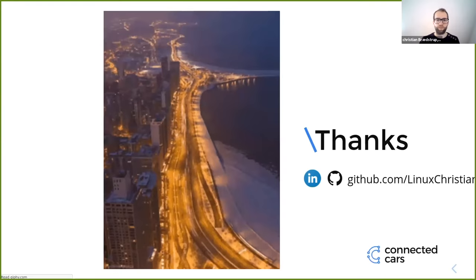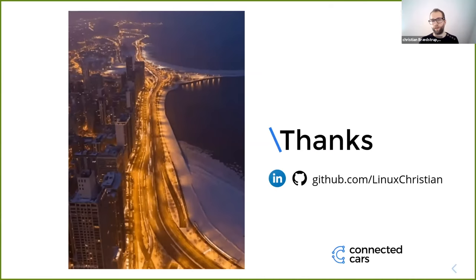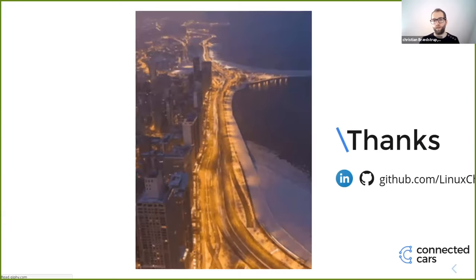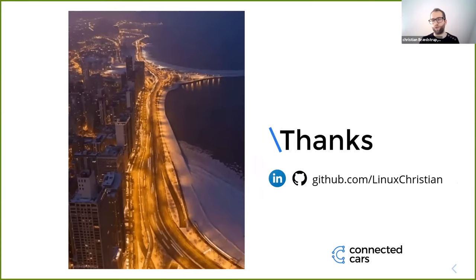We're in a much better place with Stout, but there's still a lot of work to do. The great thing is that when things break now, we can do a targeted fix, resubmit the code, and only rerun what was missing — because we have all the execution information for each job. We're only recomputing what needs to be recomputed, which is a really nice place to be.